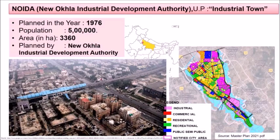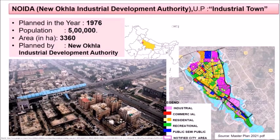NOIDA — New Okhla Industrial Development Authority area — is in Uttar Pradesh. It is an industrial town planned in 1976 with a population of five lakhs and an area of 3,360 hectares, planned by the New Okhla Industrial Development Authority.